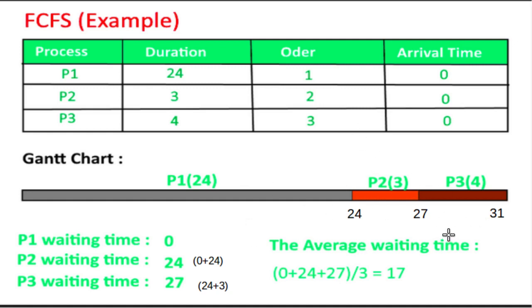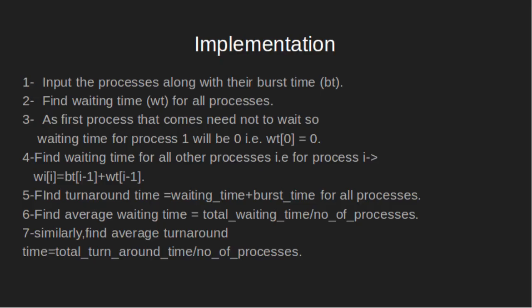So the average turnaround time would be 24 plus 27 plus 31 divided by 3, which equals 27.33. Now let's look at the implementation.